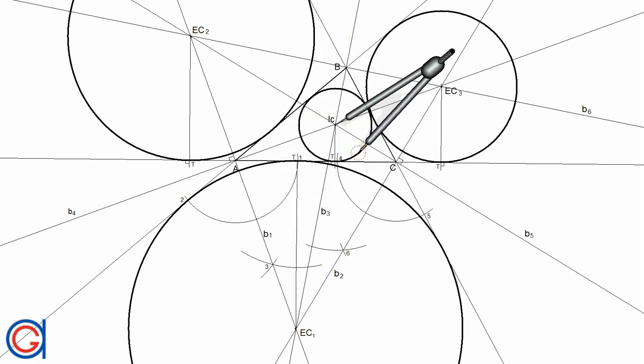So here we have the in-circle and the three x-circles of a given triangle ABC. I hope this video has helped you. Please press like or subscribe to our YouTube channel. Until the next video, thank you.